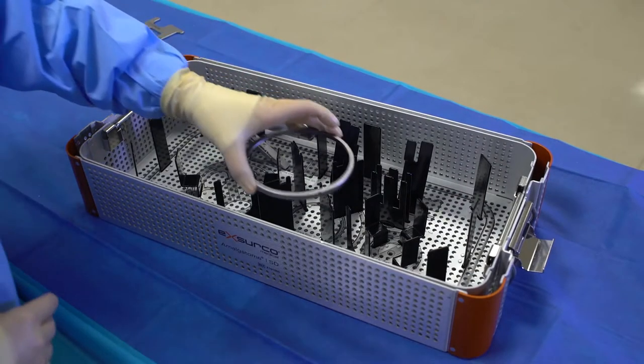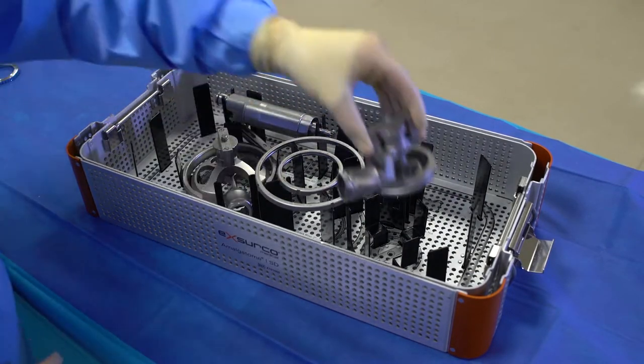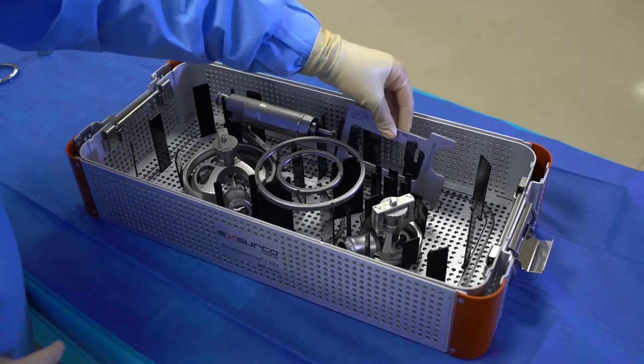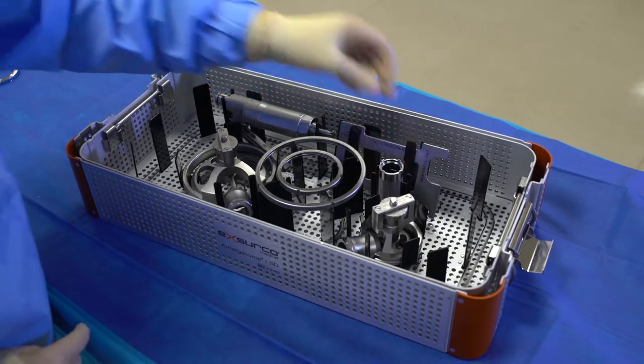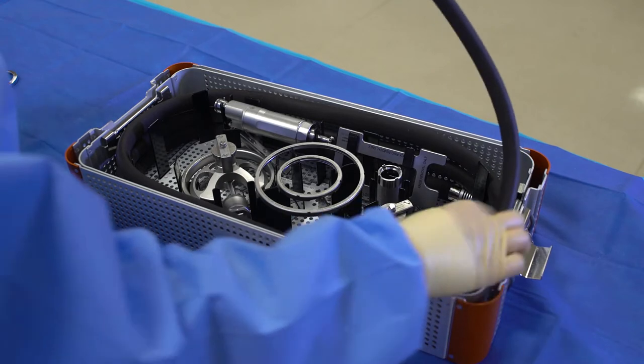Once all components are disassembled, put them in the sterilization container using the part number and guidelines for placement. Then you can send the device to Sterile Processing Department for processing.